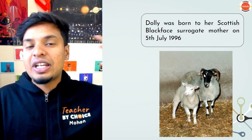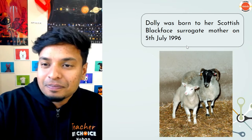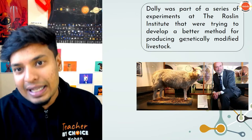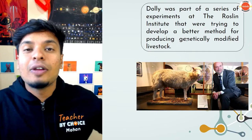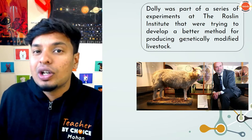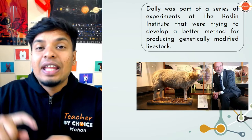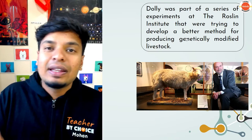Dolly was born to her Scottish Black Face surrogate mother on 5th July 1996. She was part of a series of experiments at the Rosslin Institute, where scientists were trying to develop better methods for producing genetically modified livestock — similar to how broiler chickens are genetically modified to grow faster and have more meat.